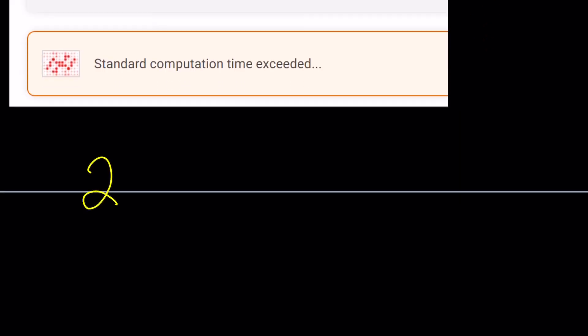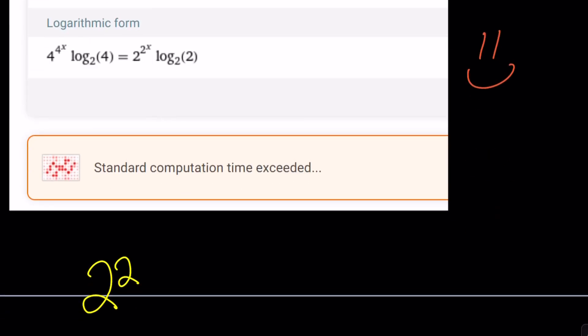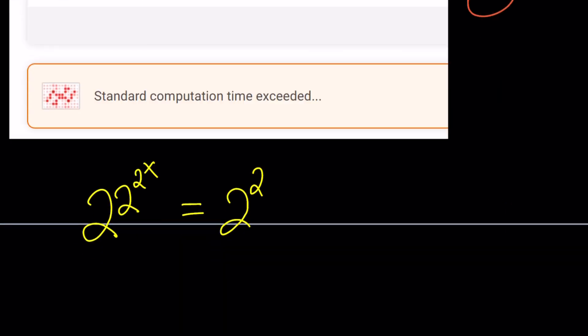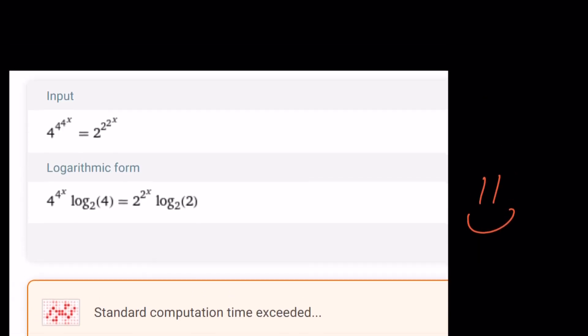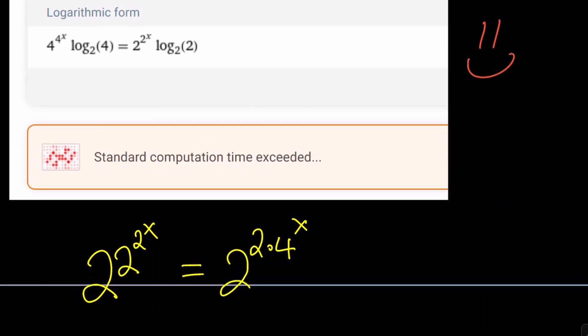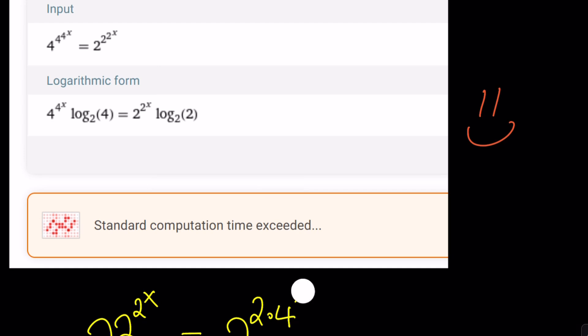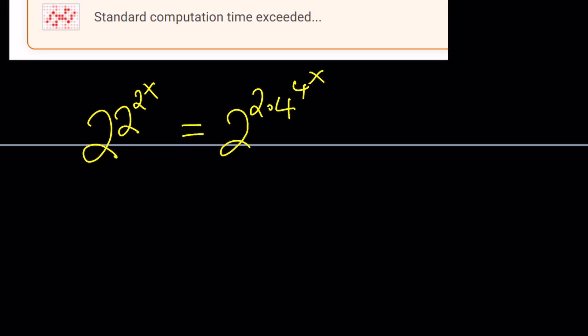We have 2 to the power 2 to the power 2 to the power x equals 2 to the power 2 times 4 to the power 4 to the power x. So this is what we have so far. And again, the bases are equal, so we can just compare the exponents. Let's do it. 2 to the power 2 to the power x equals 2 times 4 to the power 4 to the power x. But that can be written as 2 squared to the power 4 to the power x.